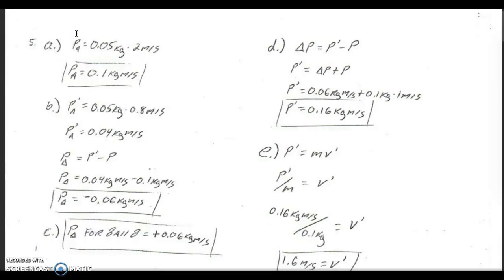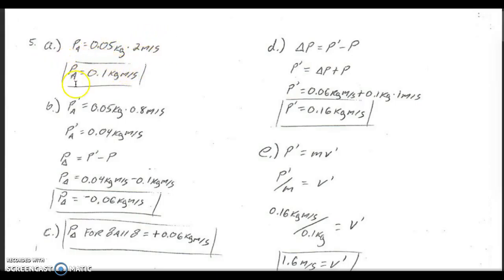For part A, what is ball A's original momentum? Momentum is just mass multiplied by velocity. The mass was given as 0.05 kilograms and the velocity was given as 2 meters per second, so that means it's going to have a momentum of 0.1 kilogram meters per second.